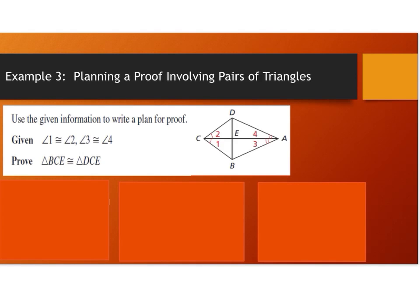Example 3 — planning a proof involving pairs of triangles. Use the given information to write a plan for proving that triangle BCE is congruent to triangle DCE. Let's further understand how to attack any proof.